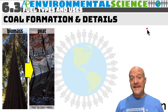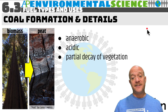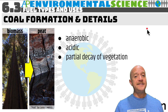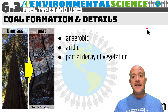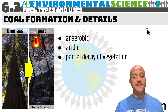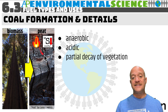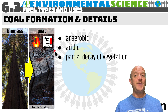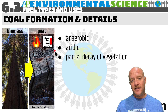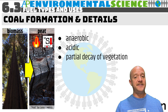The first stage forms peat. Peat is formed under anaerobic and acidic conditions; it is the partial decay of vegetation. Peat has a low heat content, so it won't burn as hot as coal, and it also has a relatively low sulfur content. Sulfur is an issue because when it gets into the atmosphere it can contribute to acid precipitation. You should understand the heat content and sulfur content for each stage of coal.